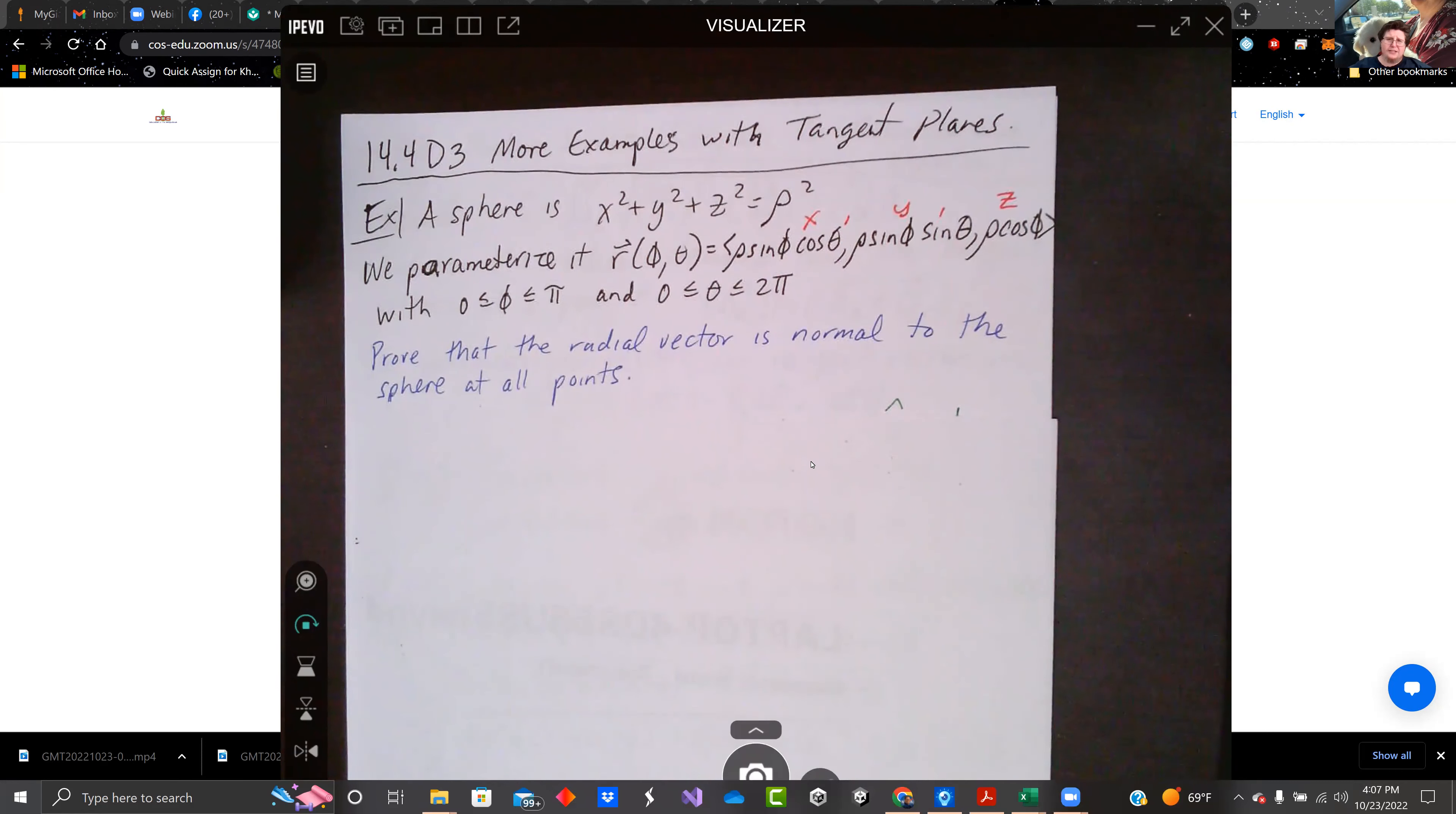So here we're looking at a sphere. A sphere is x squared plus y squared plus z squared equals rho squared. That's right, the equation for a sphere.